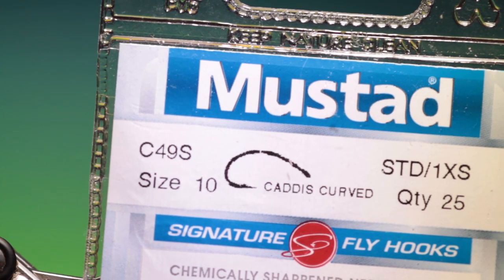Okay, we'll start with the Mustard C49S size 10 curved caddis hook. This is the yellow quill buzzer.